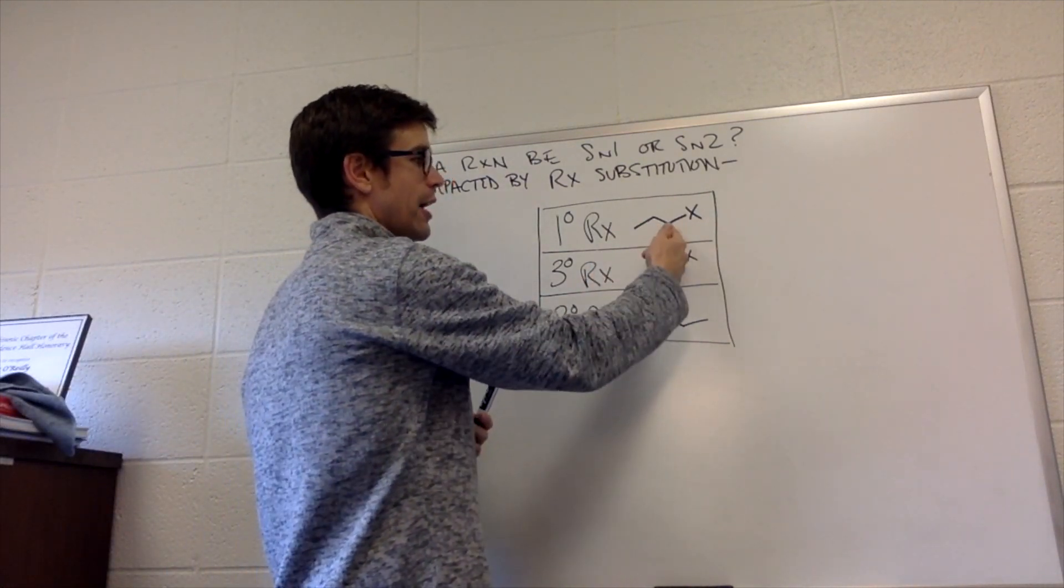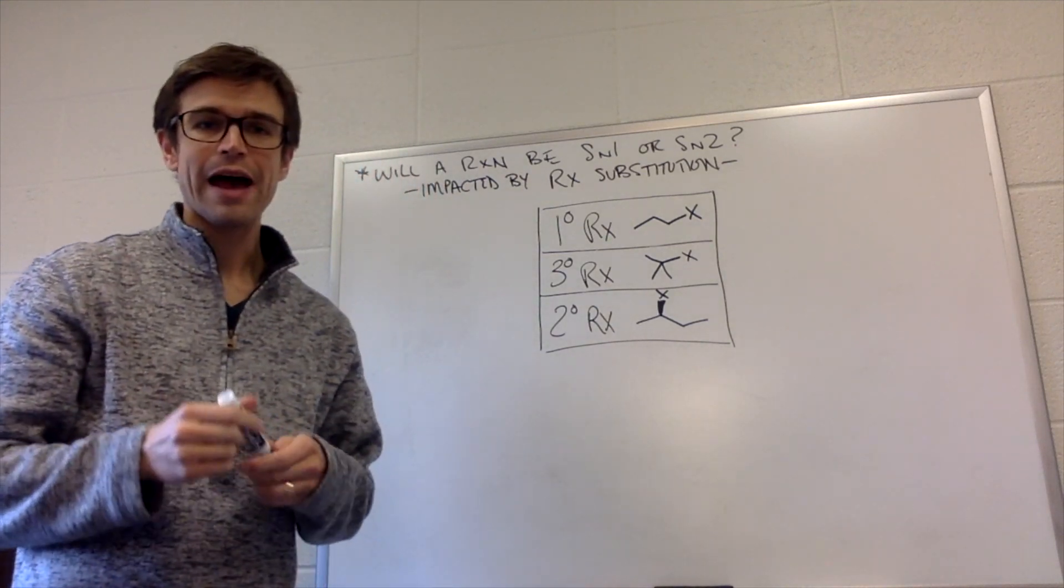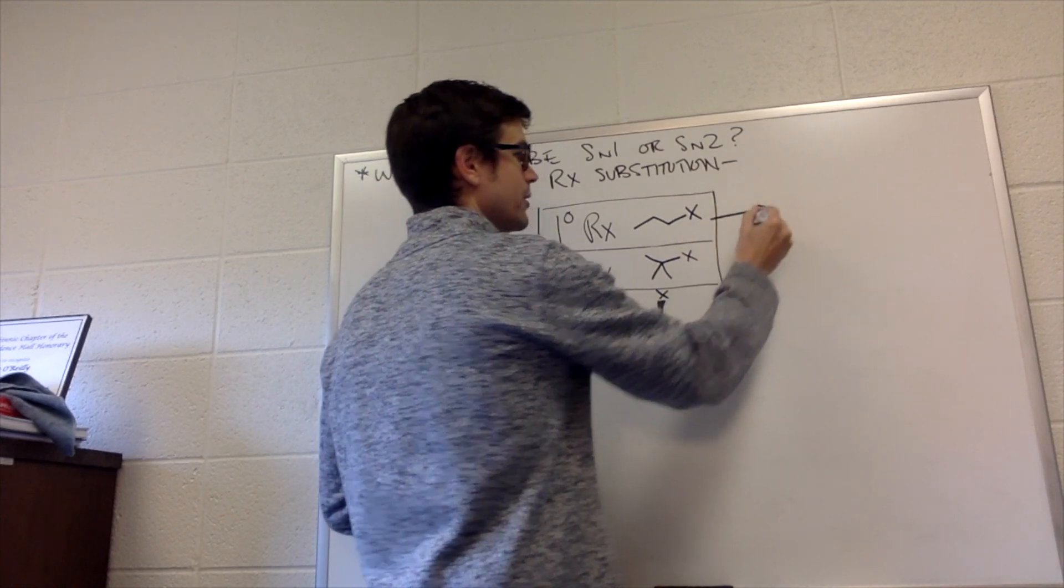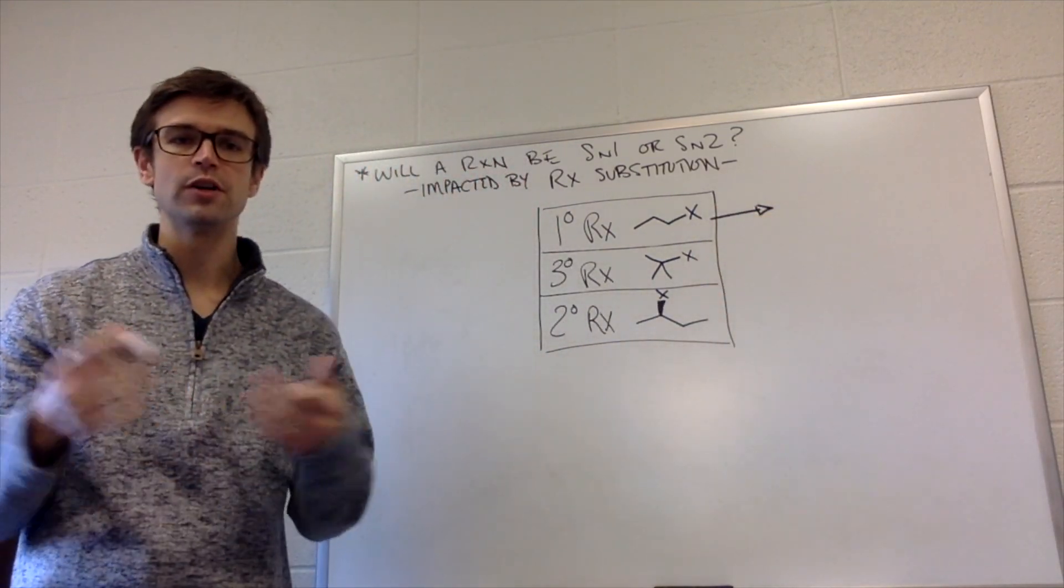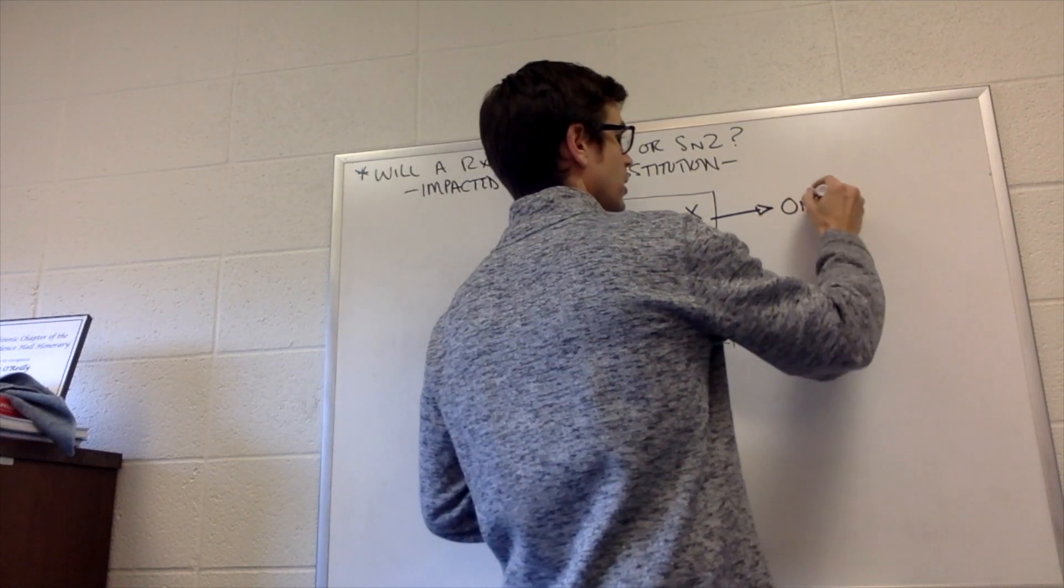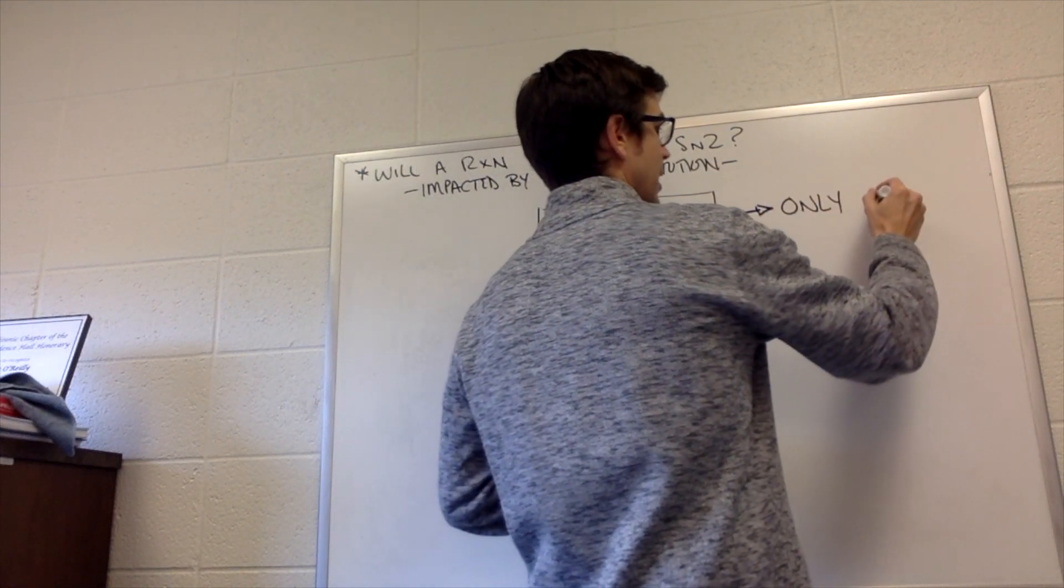So the nucleophile has a lot of space to add to that primary alkyl halide. So it turns out that any time you have the primary alkyl halide, because that sigma star orbital is so open, it will do only SN2 chemistry.